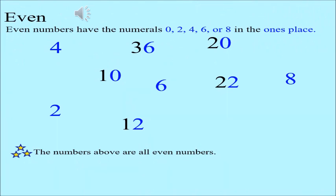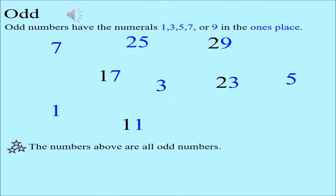Even numbers have numerals 0, 2, 4, 6 or 8 in the ones place. The numbers above are all examples of even numbers. Odd numbers have the numerals 1, 3, 5, 7 or 9 in the ones place. The numbers above are all examples of odd numbers.